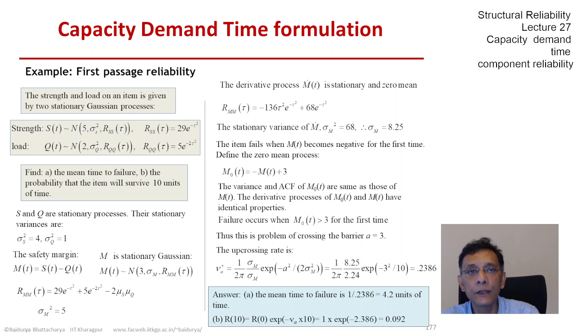The mean time to failure, because we are talking about an exponential random variable as time to failure, is 1 over the rate, so that is 4.2 units of time. And R(10) is R(0) times exponential minus nu times t, or 10, and that gives me an answer of about 9.2 percent.